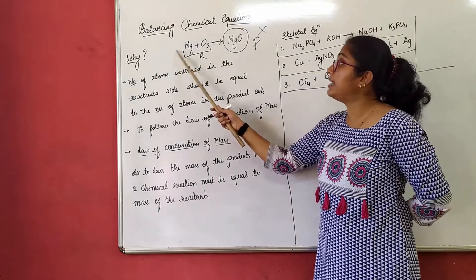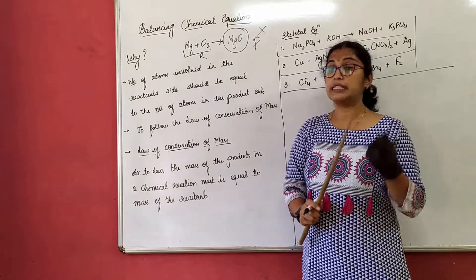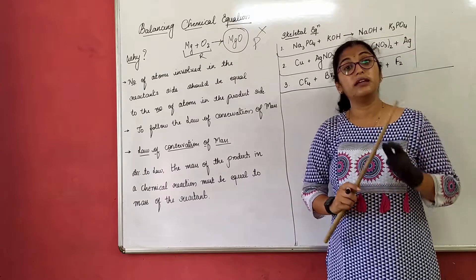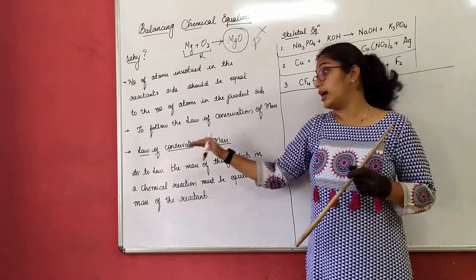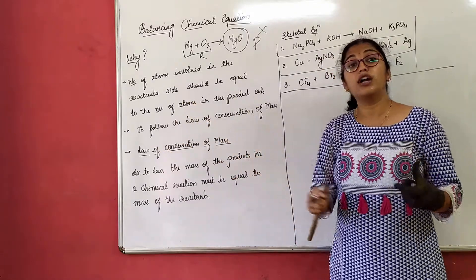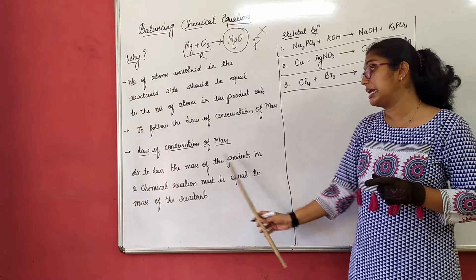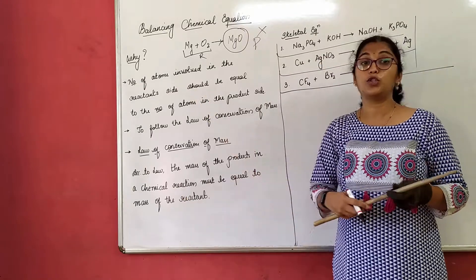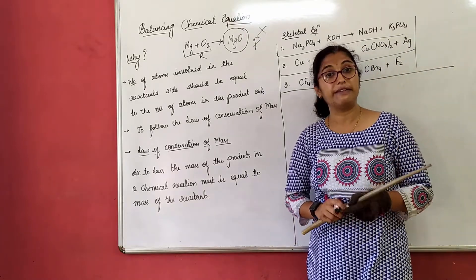We have to always balance a skeletal equation. We are not supposed to keep an equation without balancing, because the number of atoms in the reactant should always be equal to the number of atoms in the product. That means we are satisfying the law of conservation of mass, which you studied in ninth standard. According to the law, the mass of the product in a chemical reaction must be equal to the mass of the reactant. So to satisfy the law of conservation of mass, we have to balance the given chemical equation.